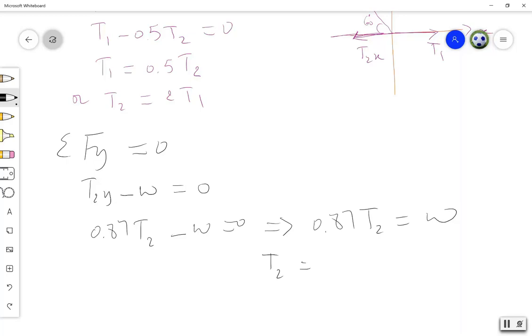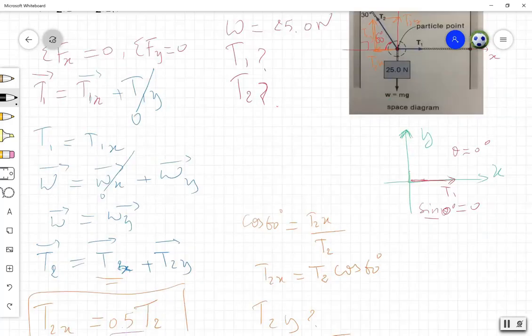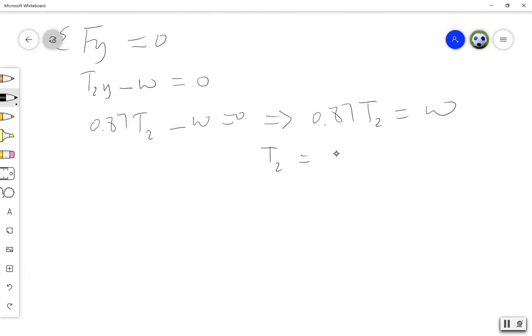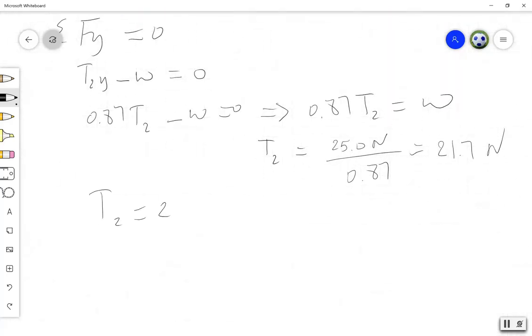And from here we can say that 0.87 T2 equals W, and T2 equals, what is W? W is given as 25.0 newton. So it is 25.0 newton over 0.87, and this gives me 21.75, or 21.7 newton. That's T2. And we know that from what we got here, T2 equals 2T1. So T1 is half T2. T1 equals 10.87 newton, or 10.9 newton.